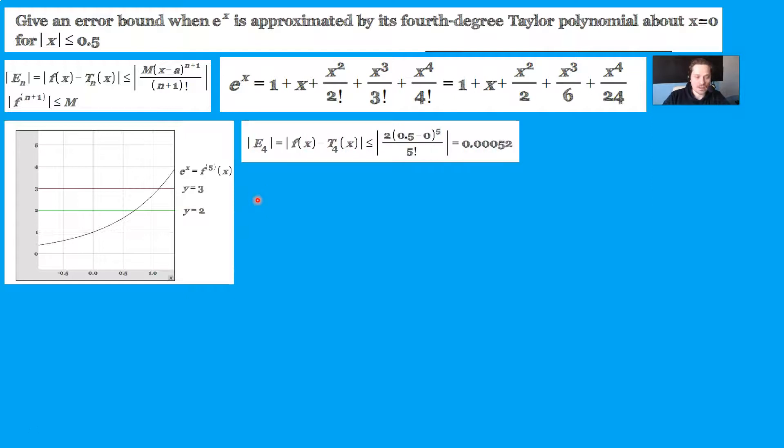So this is what I mean. Take a look. If I choose to use y equals 2 as a bound on the 5th derivative of e to the x, look at what happens. e sub 4 is an absolute value f of x minus the 4th degree polynomial. It would then be less than or equal to, and I'm using 2 in this position right here. That's a bound on the 5th derivative of e to the x. And then here you put 0.5 minus 0, you raise it to the 5th. Remember, this is n equals 4 right here. So that means here you do 4 plus 1, which is 5. And on the bottom you have then 5 factorial. You punch this into your calculator, that's 0.00052. So that's one way to do it.